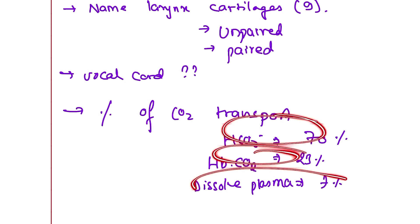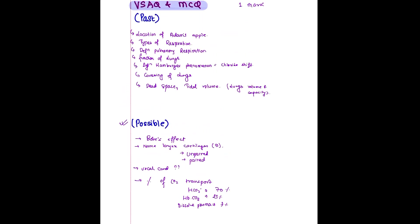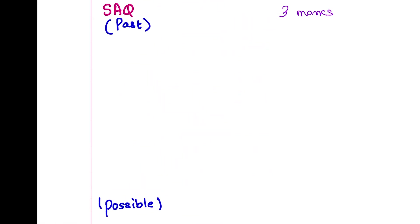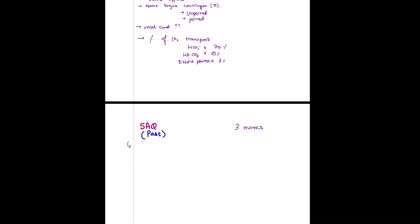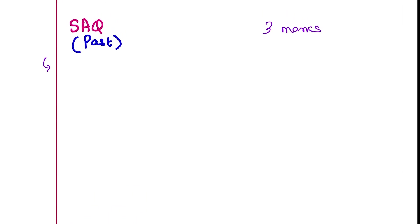MCQ is 1 mark each. Moving on to past questions — SQ one and two. PDF available on Telegram links, free access for everyone appearing in NEB. Past SAQ: CO2 transport — discuss CO2 transport, how CO2 is transported from tissue to the lungs.